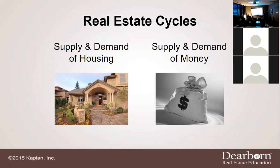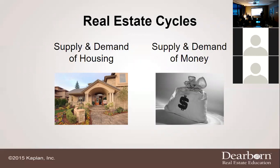In real estate, of course, we have cycles — supply and demand of housing and money. If there are a lot of houses on the market that are available, we call it a buyer's market. Why? Because you have a lot of options, a lot of inventory — you can pick your choice. If there's a ton of inventory and your client has a contingency and wants to upgrade, you'd want them to be in a market with a lot of houses, so they aren't turned down by multiple sellers because of the contingency.